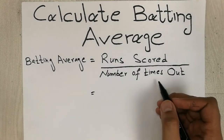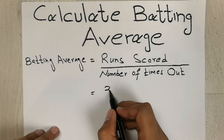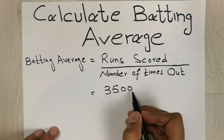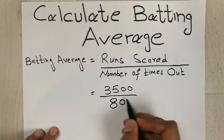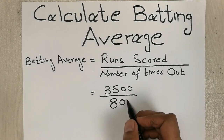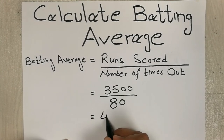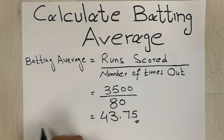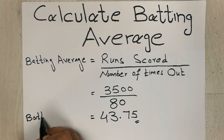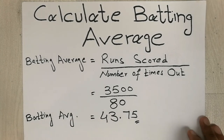For example, in your total career you scored 3500 runs and you were out 80 times. Your total runs are 3500, so when we do this calculation we get our answer, which is 43.75. This is our batting average — this is how we calculate the batting average in cricket.